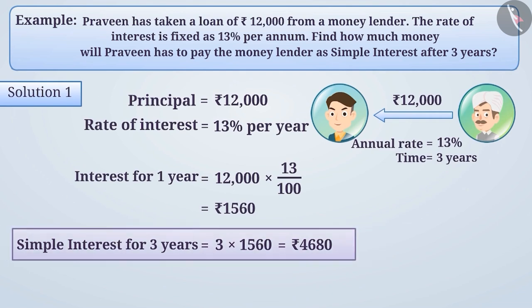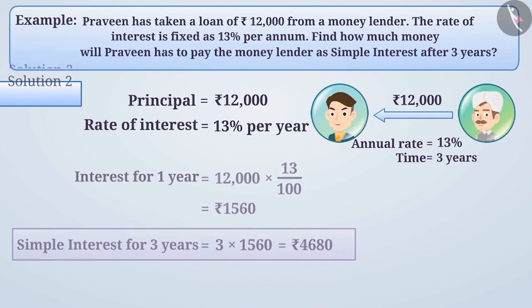That is, after 3 years, Praveen will have to pay Rs 4,680 as simple interest to the money lender.